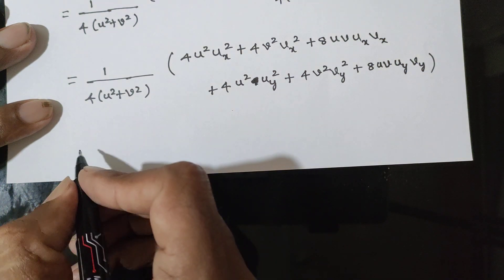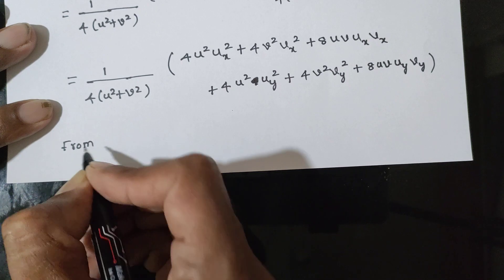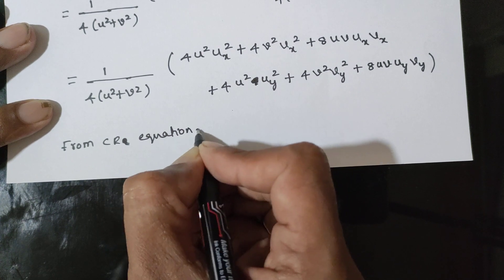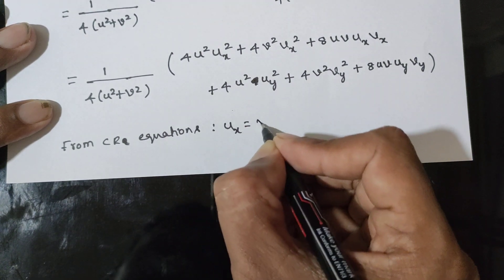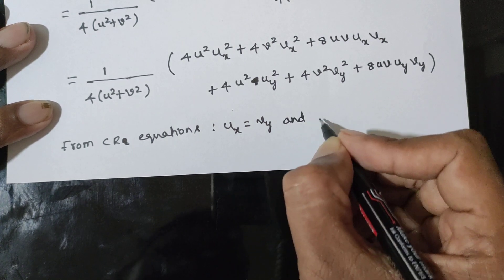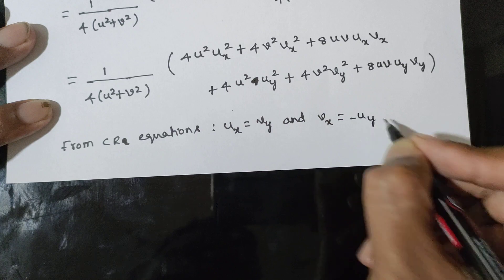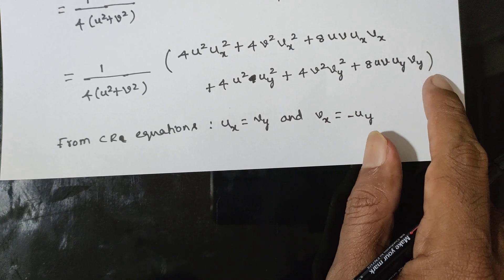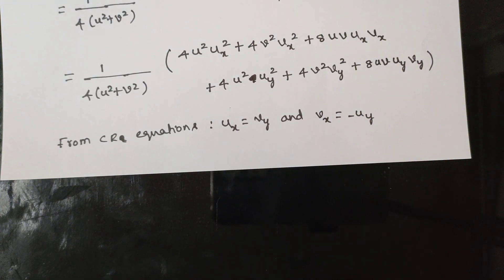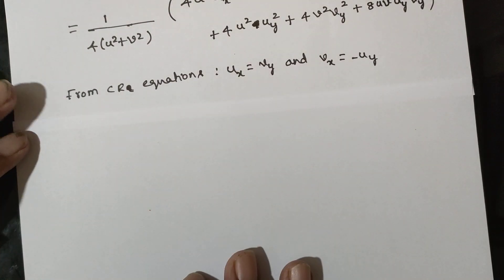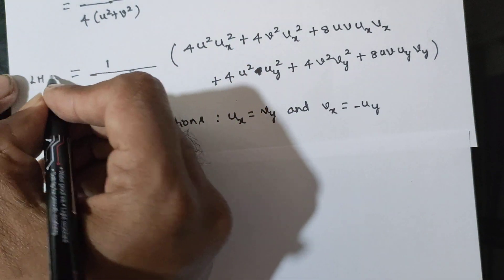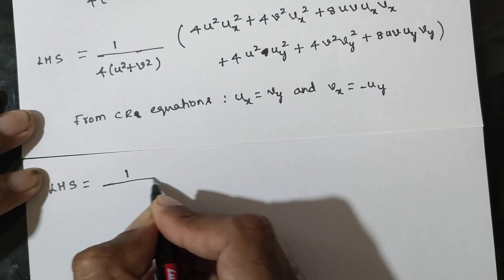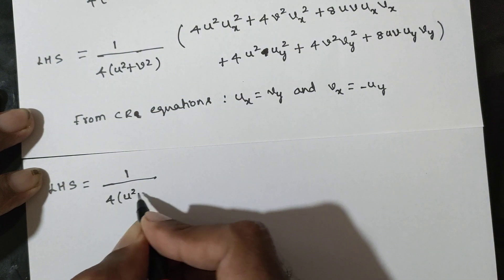Here we go from the Cauchy-Riemann equations: ux equals vy, and vx equals negative uy. Using CR equations, uy is equal to negative vx, and vy is equal to ux. So LHS is equal to RHS.